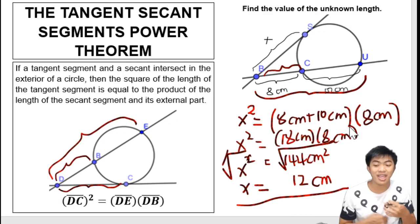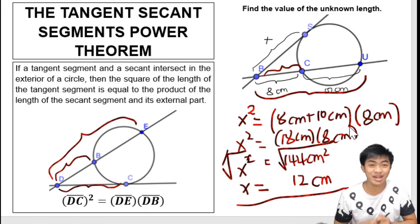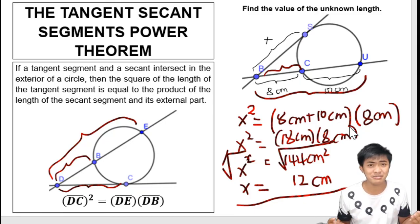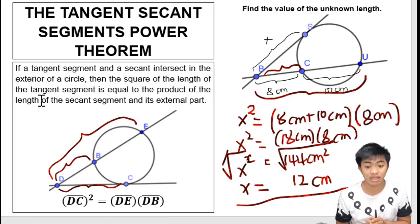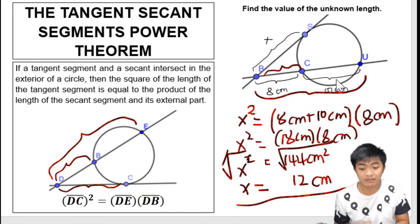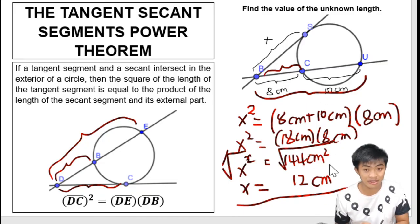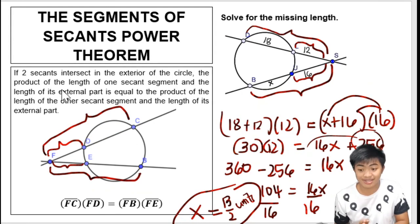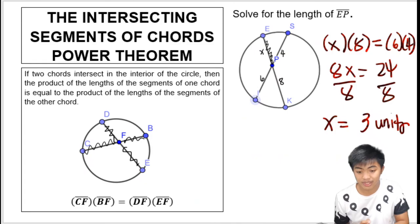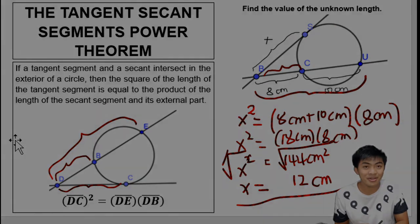So that's it for power theorems. You might still be confused about secant segment, tangent segment, and external part — just be aware of them. Also, be mindful of the unit: if a unit is given, like centimeters in this example, use that unit. If none is given, just write 'units.' There you go, guys. Bye!